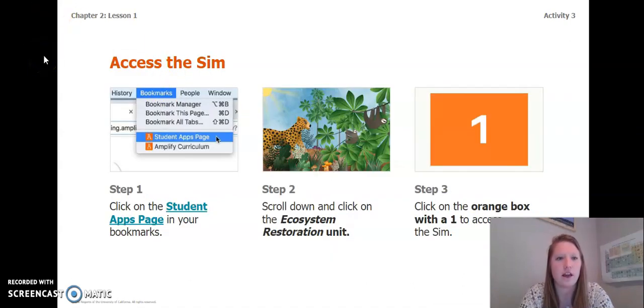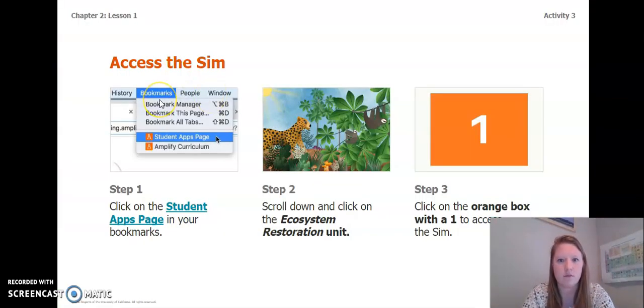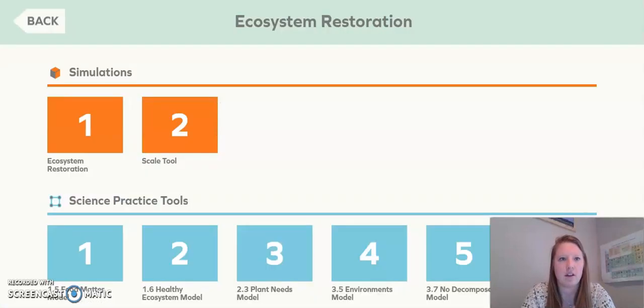To get on to the Amplify simulation, you are going to log on to Amplify, scroll down to the Ecosystem Restoration Unit, and then click on the orange box 1 to access the simulation. I am going to go ahead and do that now.